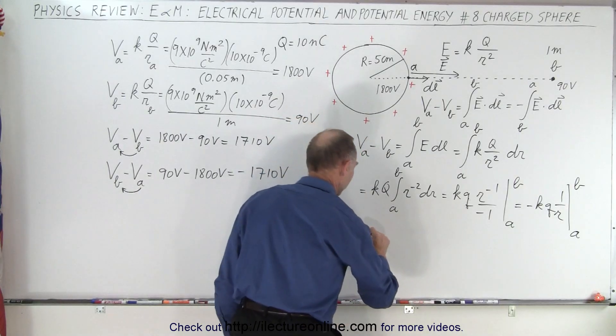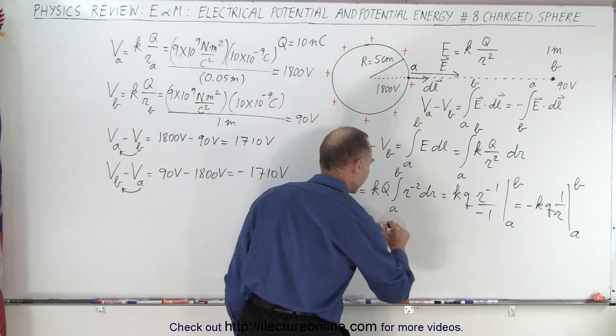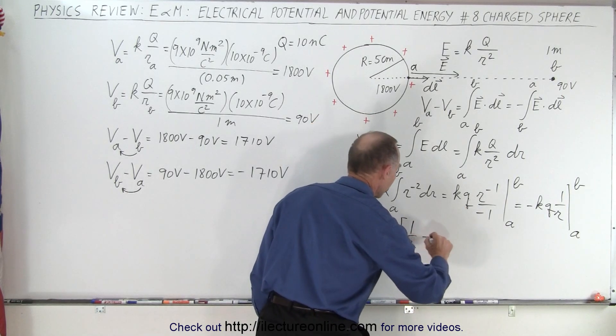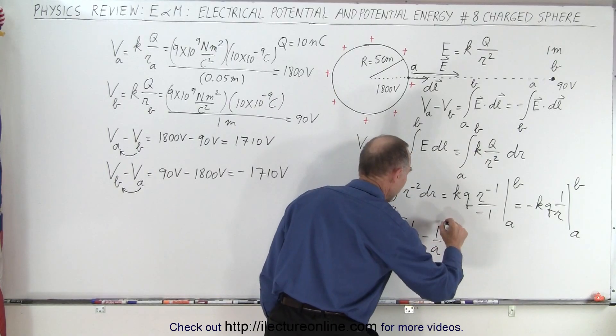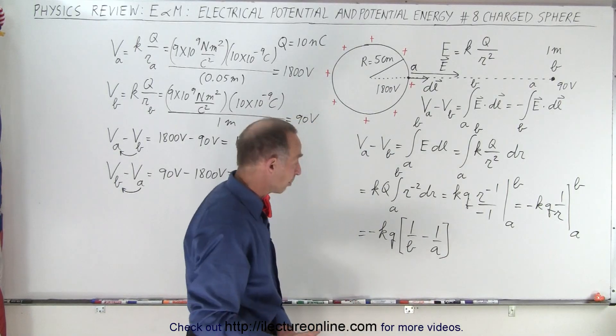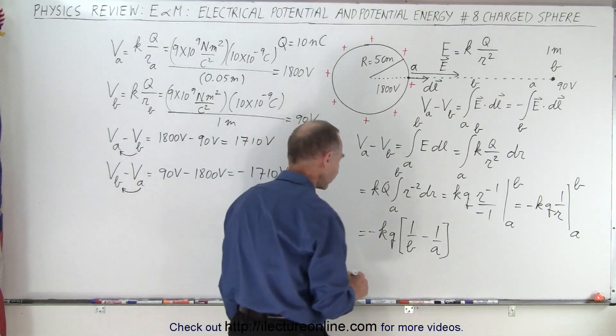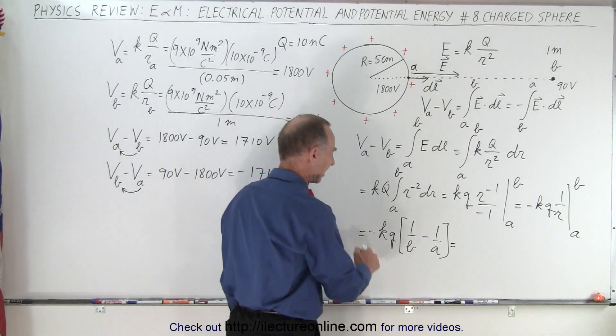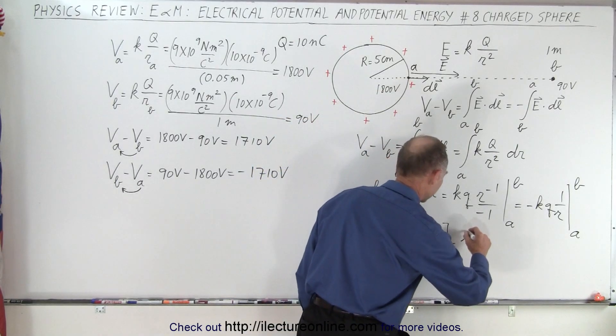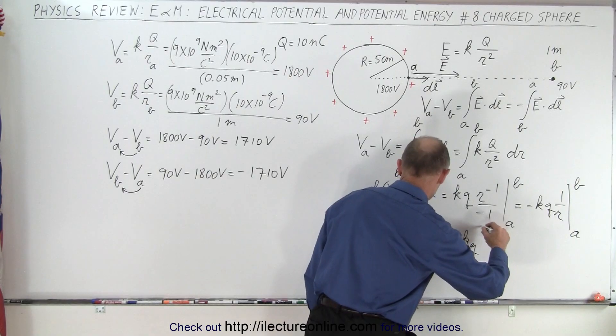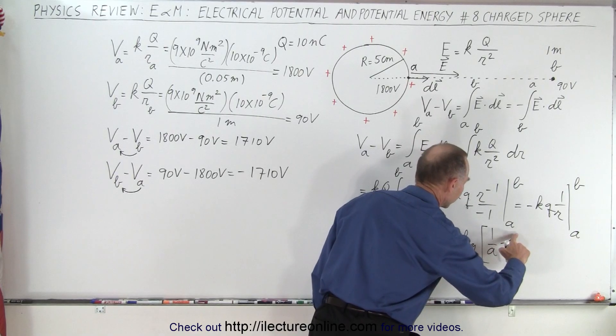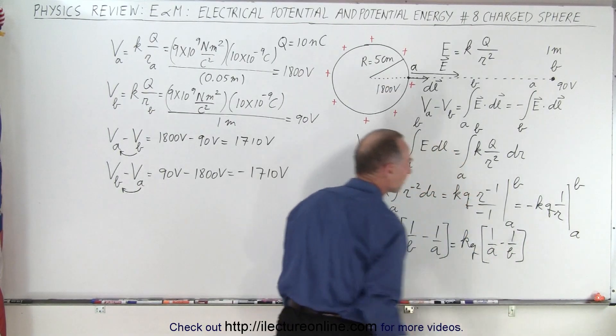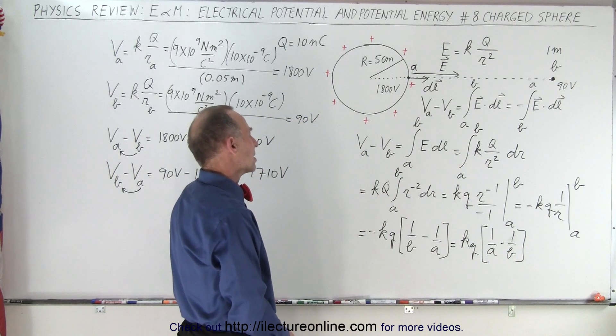So we should rewrite this as a negative KQ times 1 over R, evaluated from A to B. So now we go ahead and put in those limits, so we have minus KQ times, putting the upper limit would be 1 over B, minus putting the lower limit would be minus 1 over A. Now we can go ahead and plug in those values. Actually, we could reverse the order and get rid of this negative sign, so we can write this as KQ times 1 over A minus 1 over B.